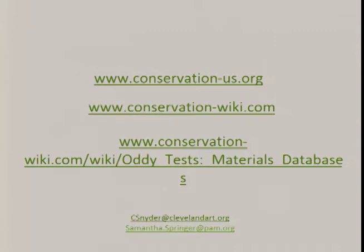I'm also soliciting contributors. If you have a database or list of results you'd like to contribute, please find me afterwards — I'd be happy to help you get it up there. By establishing best practices for sharing results on the AIC Wiki, such as each contributor describing their testing protocol and imaging the test coupons, the databases will allow conservators to better evaluate others' results for themselves. By publishing testing results on a neutral site like the AIC Wiki, we hope other institutions will see the benefit and feel comfortable participating in greater numbers. Since the site has been up, we have not had one complaint or manufacturer say anything about the information that's up there.